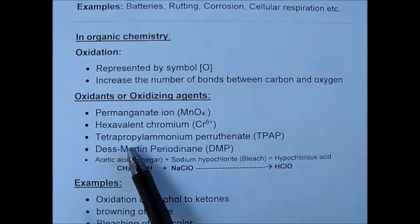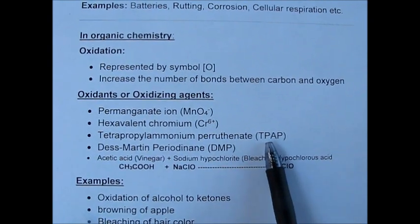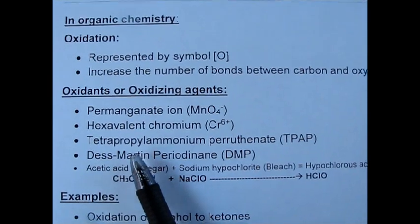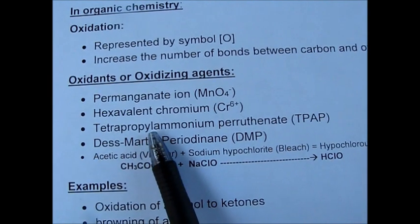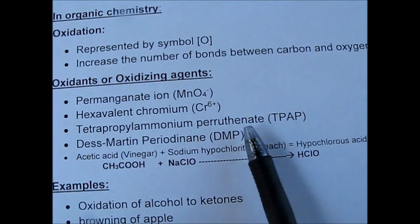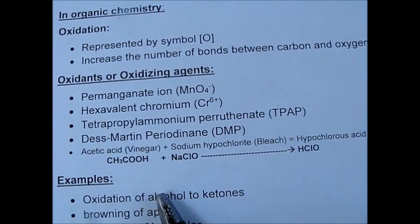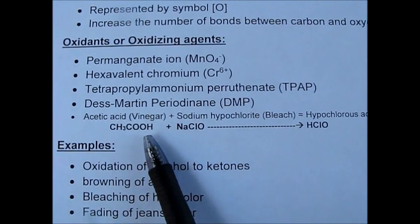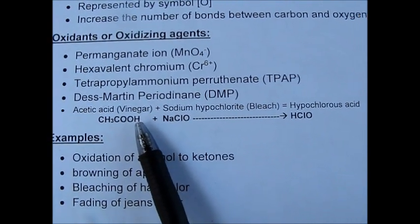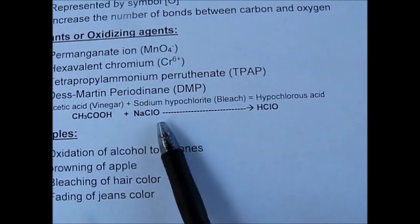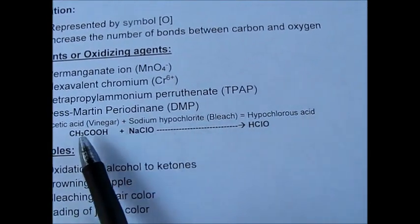Some milder oxidizing agents came later, such as TPAP — which is tetrapropylammonium perruthenate — and Dess-Martin periodinane. One more very common and mild oxidizing agent is hypochlorous acid.